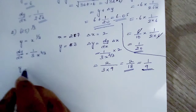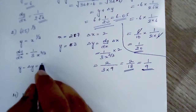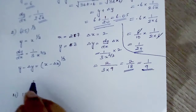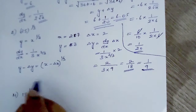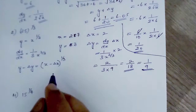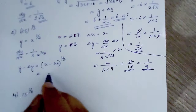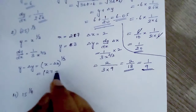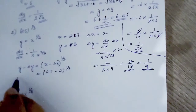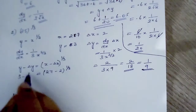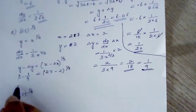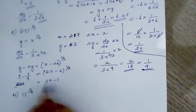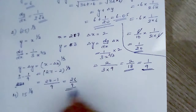So y minus delta y is equal to cube root of x minus delta x. This equals cube root of 27 minus 2, so y minus delta y equals 3 minus 1 by 9. That is 27 minus 1 over 9, which equals 26 by 9. This is the answer.